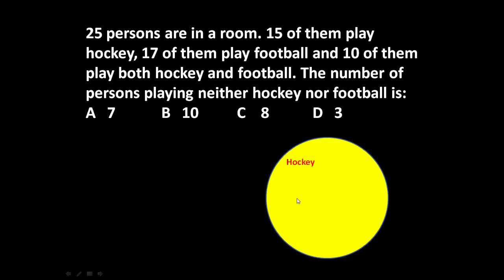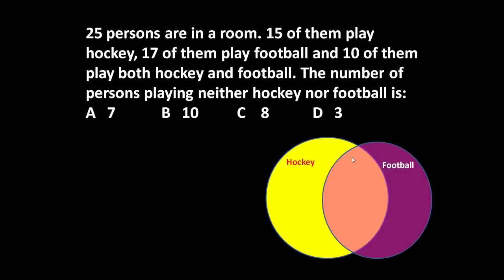To answer this question, first let us draw a circle which represents the students who play hockey. These students in yellow color play hockey. Another game is football — let us draw another circle. This circle represents the students who are playing football.